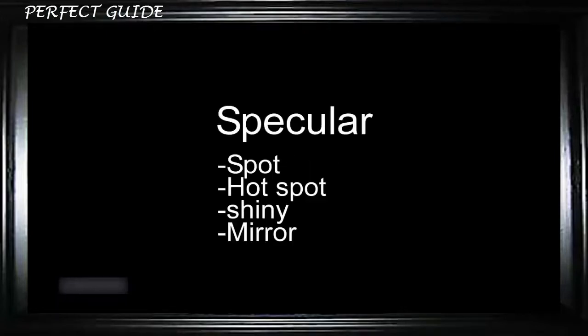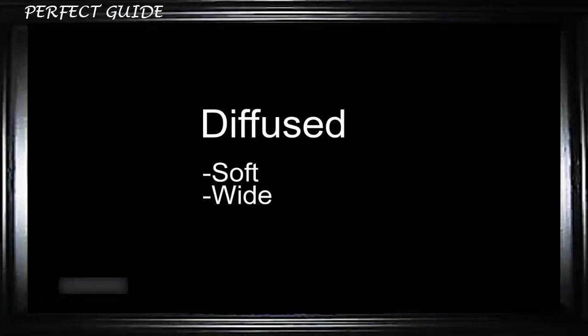Now we'll take a look at highlights both specular and diffused. Specular highlights are described as spot, hot spot or mirror like while diffused are usually wide and soft. Here we are talking about highlights rather than light quality.